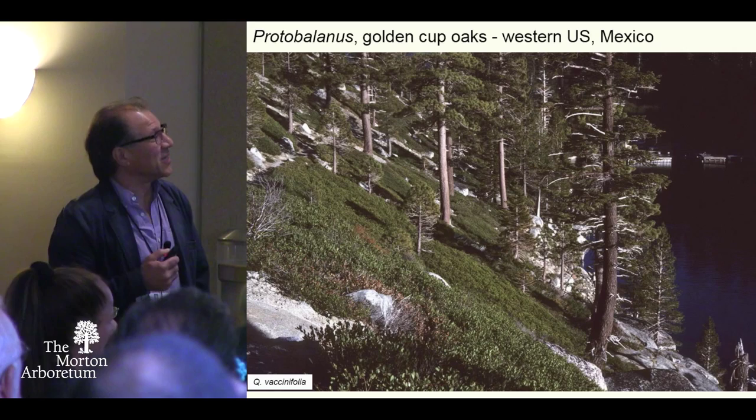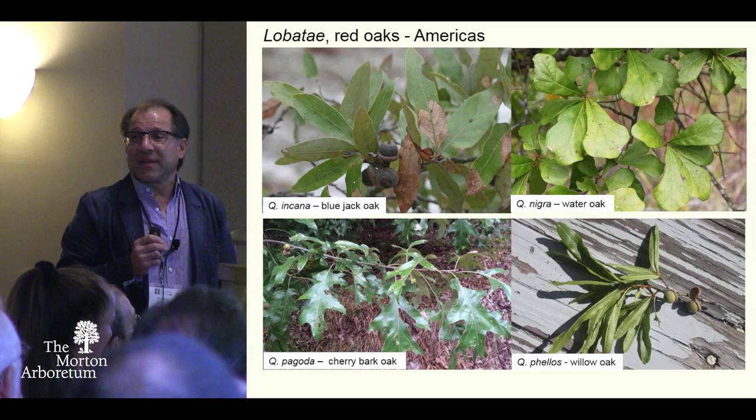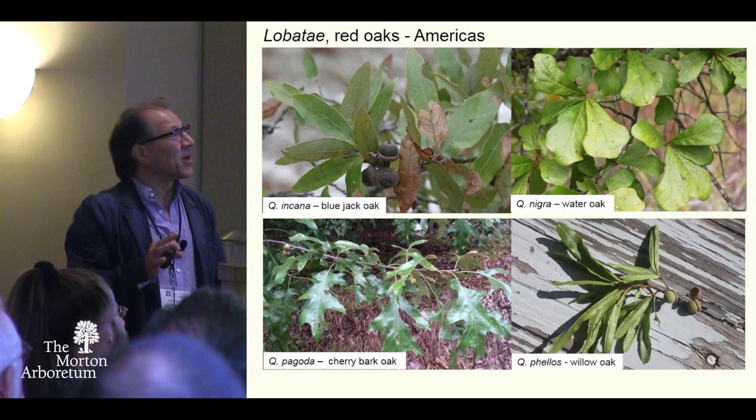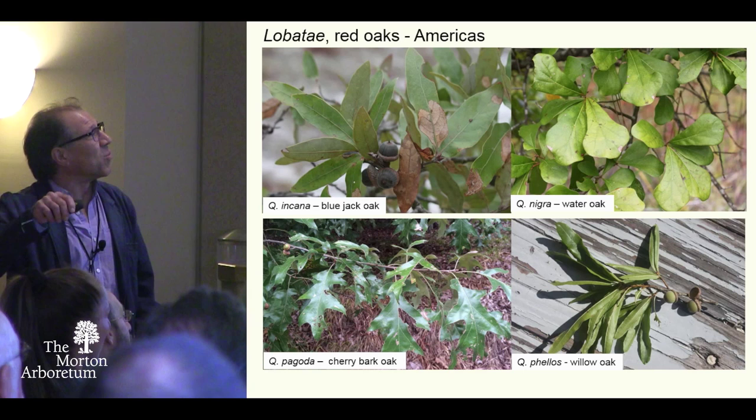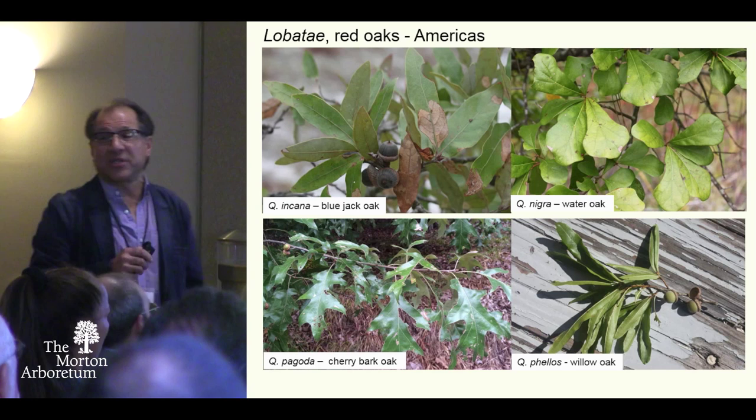Here are oaks from my neck of the woods — these are the Lobatae, or the red oaks, strictly American. These four species are closely related and they really look quite different in morphology. You might know the willow oak, which is widely planted, the water oak, and this coastal endemic Quercus incana, and Quercus pagoda, the cherry bark oak. So all of these things, showing all of these forms, are actually quite closely related — and that's some of what our work has discovered.